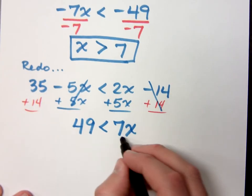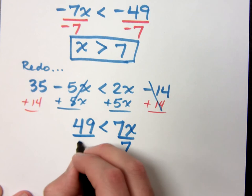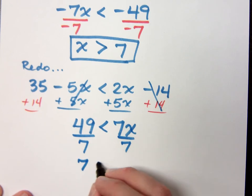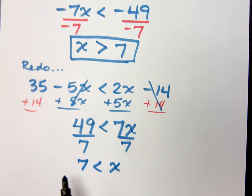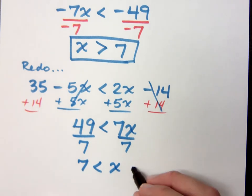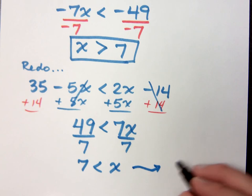Okay, well now when I divide both sides by 7 here, the inequality symbol doesn't change. I've got 7 is less than x. Now see, if you read it this way, 7 is less than x, but if you go backwards the other way, the perspective is a little bit different. x is greater than 7. So I can rewrite this and say x is greater than 7.